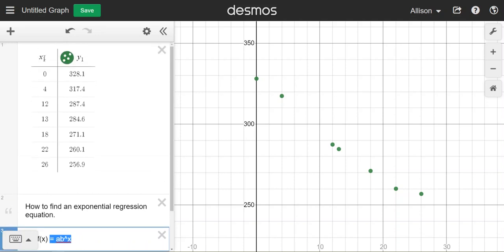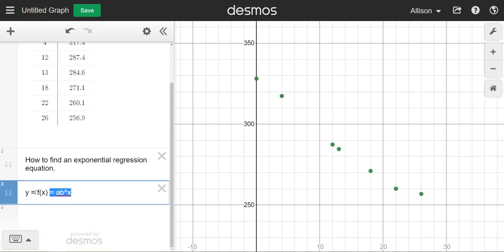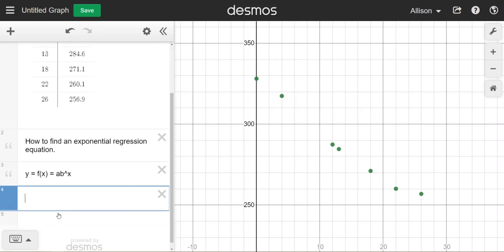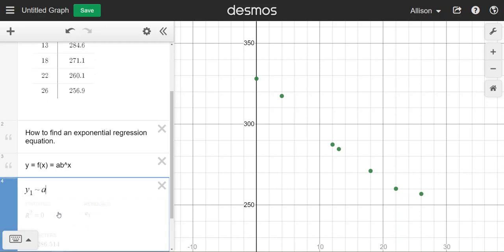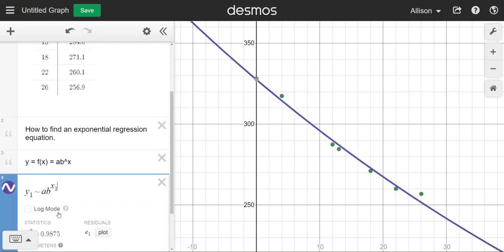This table has variables called x1 and y1 so I'm going to be replacing y with y1 and x with x1. So y1 is approximately ab to the x1 and so I see that I have a decreasing exponential model that is fairly close to the data points.